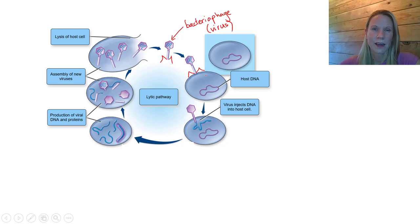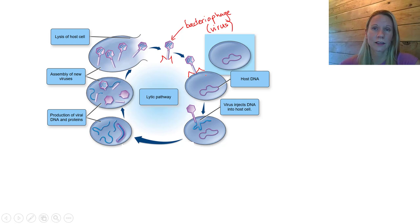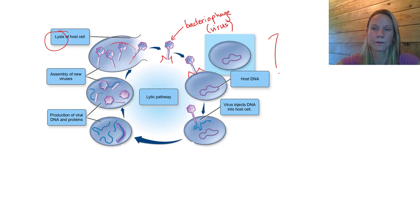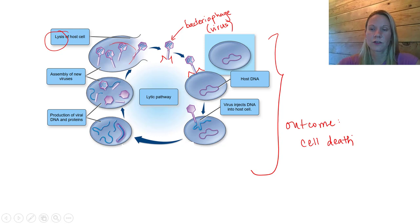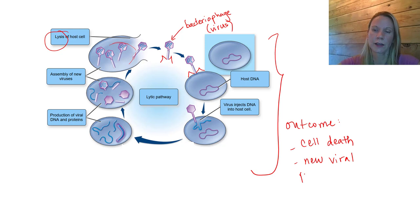The lytic cycle involves the virus attaching to the host cell, inserting its DNA into the cell, and then that viral DNA directing the production of viral proteins inside the cell. Eventually that cell is lysed or destroyed by all of the new viral progeny being produced inside. The cell breaks open — we call that process lysis, which means to break. The outcome of the lytic cycle will always be cell death, and new viral progeny will be released from that cell.